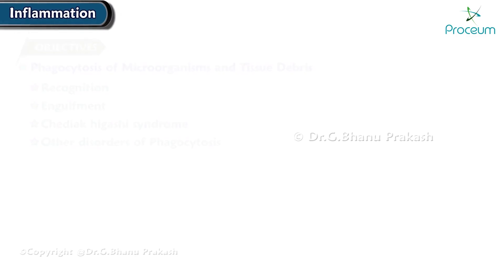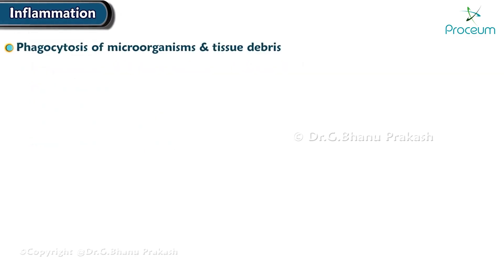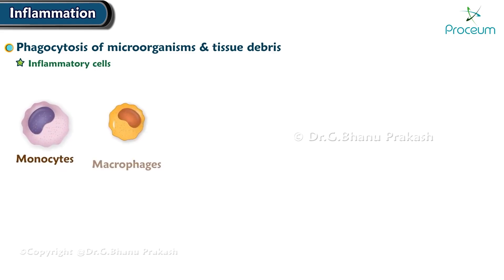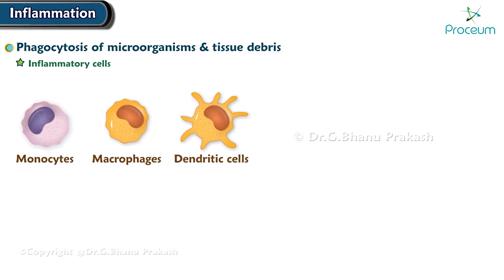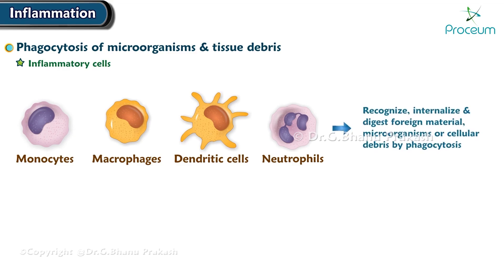In this module, we'll be talking about phagocytosis of microorganisms and tissue debris. Many inflammatory cells, including monocytes, tissue macrophages, dendritic cells, and neutrophils, recognize, internalize, and digest foreign material, microorganisms, or cellular debris by phagocytosis.